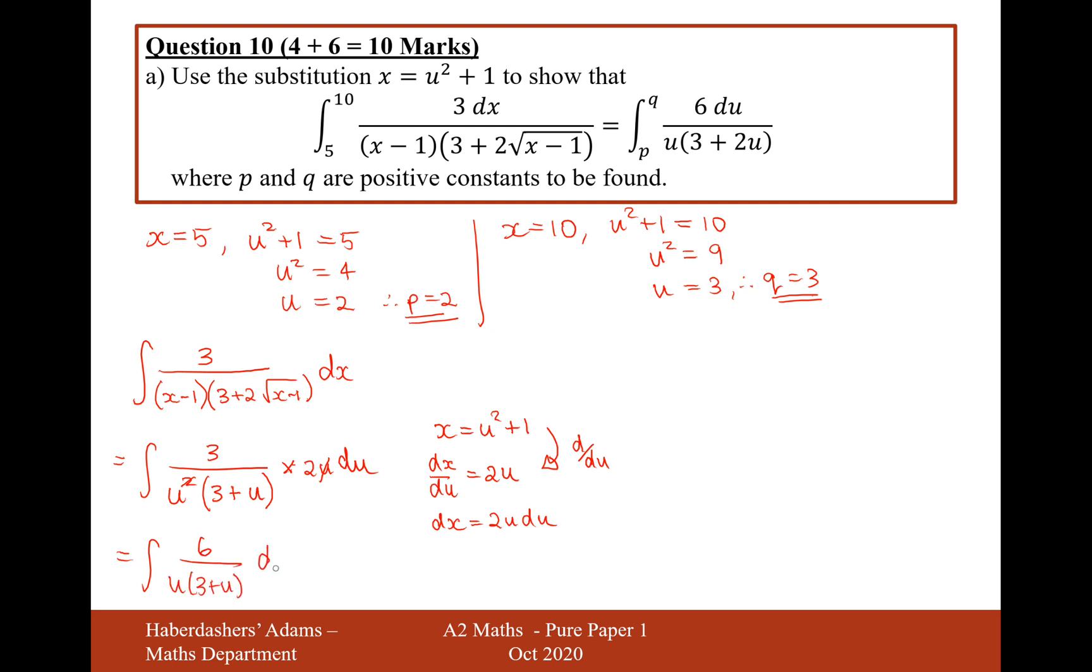Where we've previously sorted out the boundaries up the top as well. So therefore, the answer is the integral between the boundaries of 3 and 2 of 6 over u(3 plus 2u). So I dropped the 2, didn't I? 2 should be still in here, 2u du. So there we are, that's the answer for this part A here.